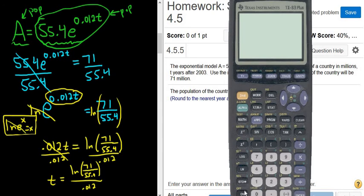So it's ln 71 divided by 55.4, and then divide by 0.012. That looks okay. I'm going to hit Enter.